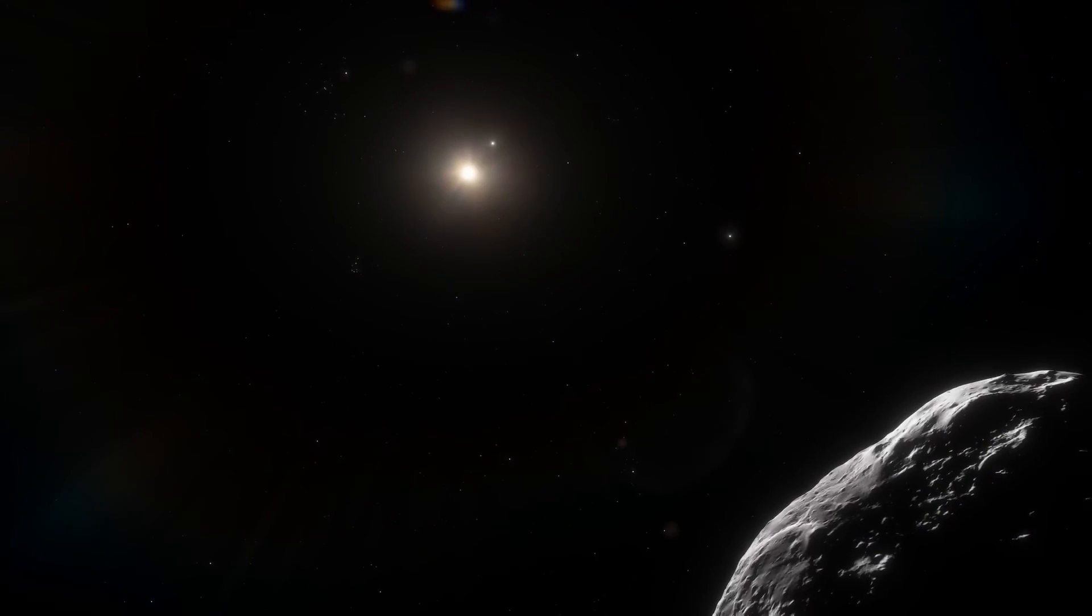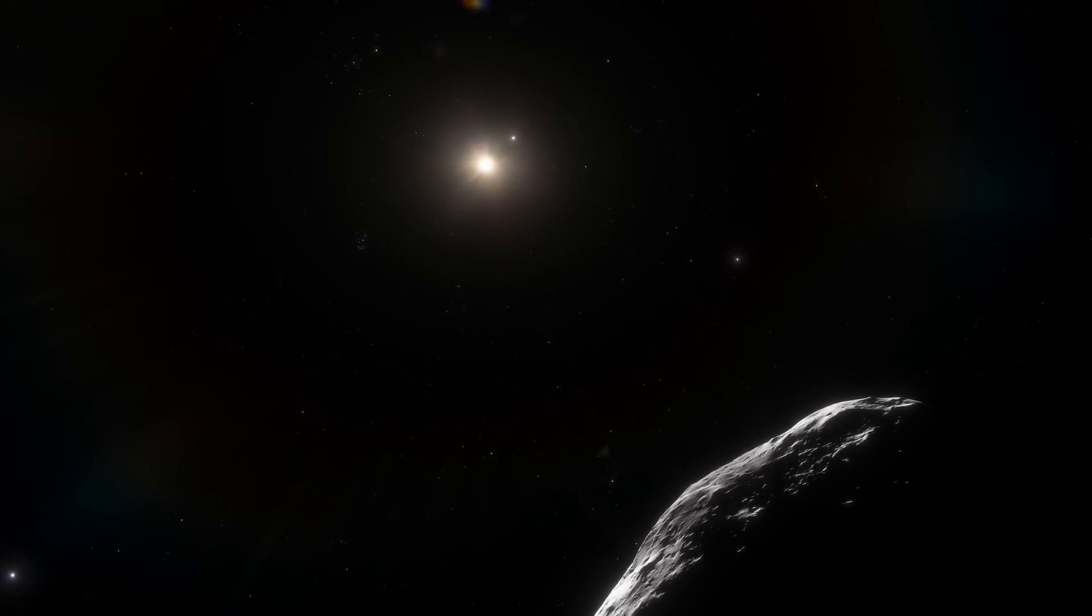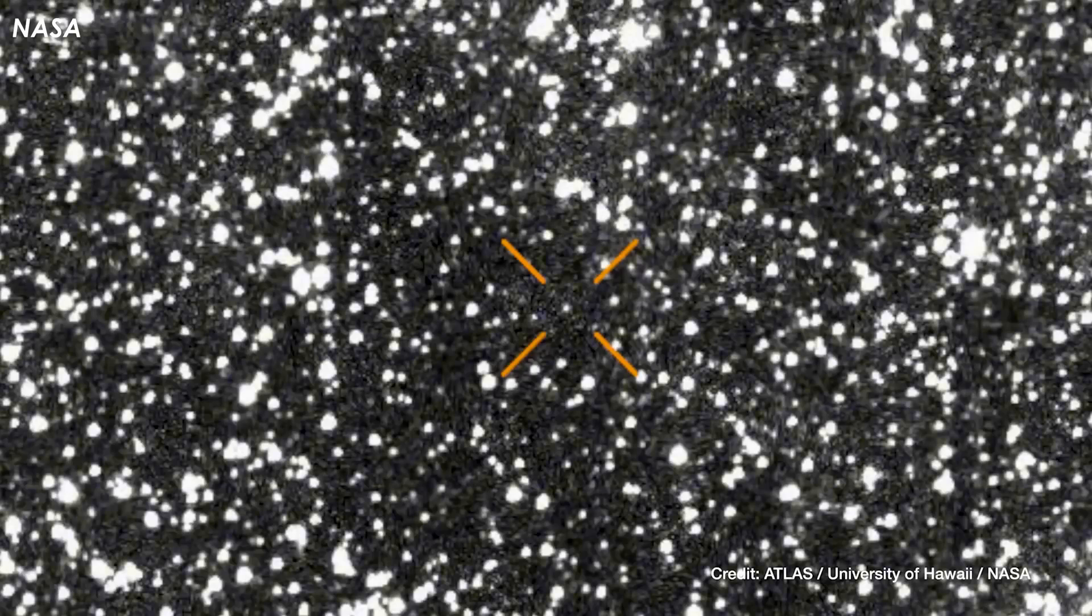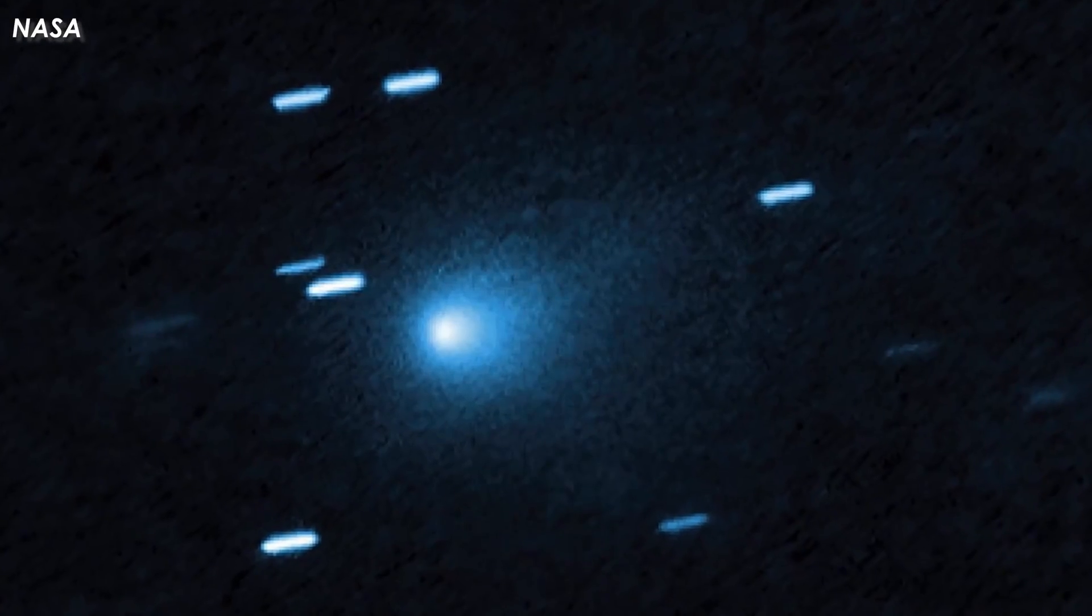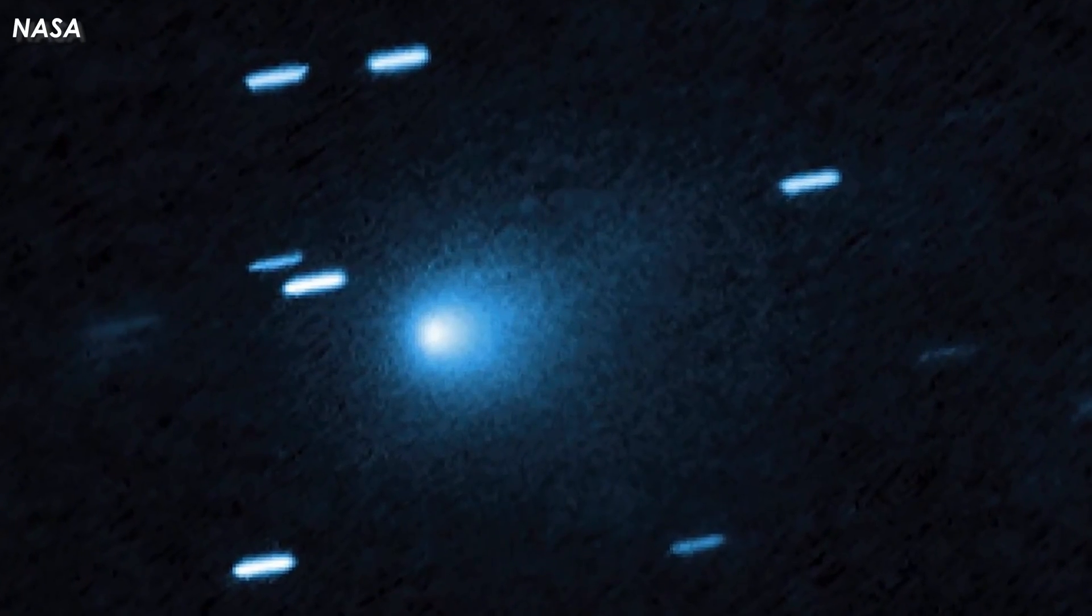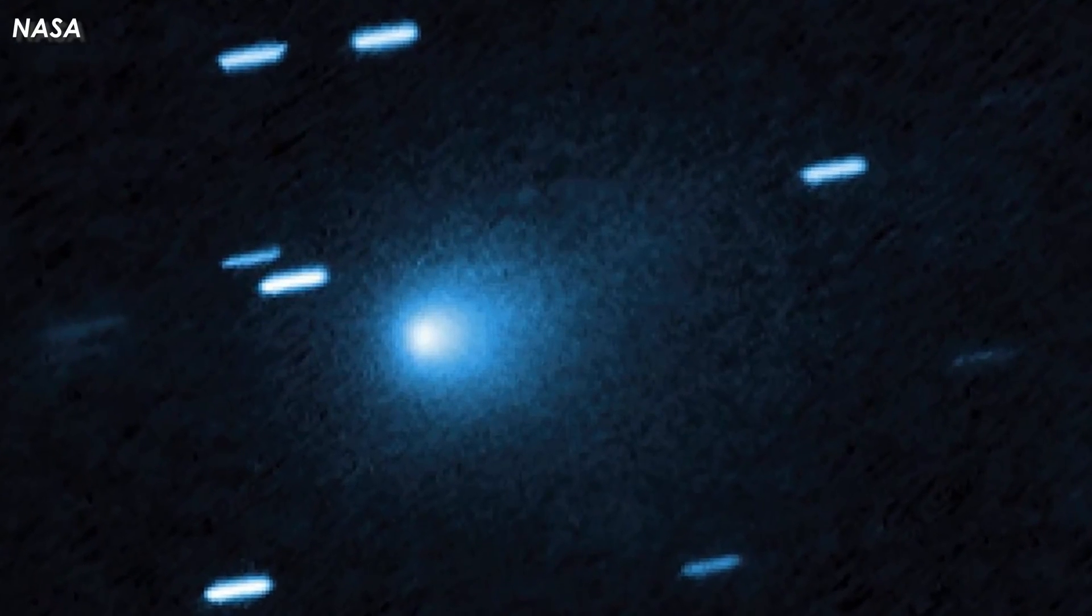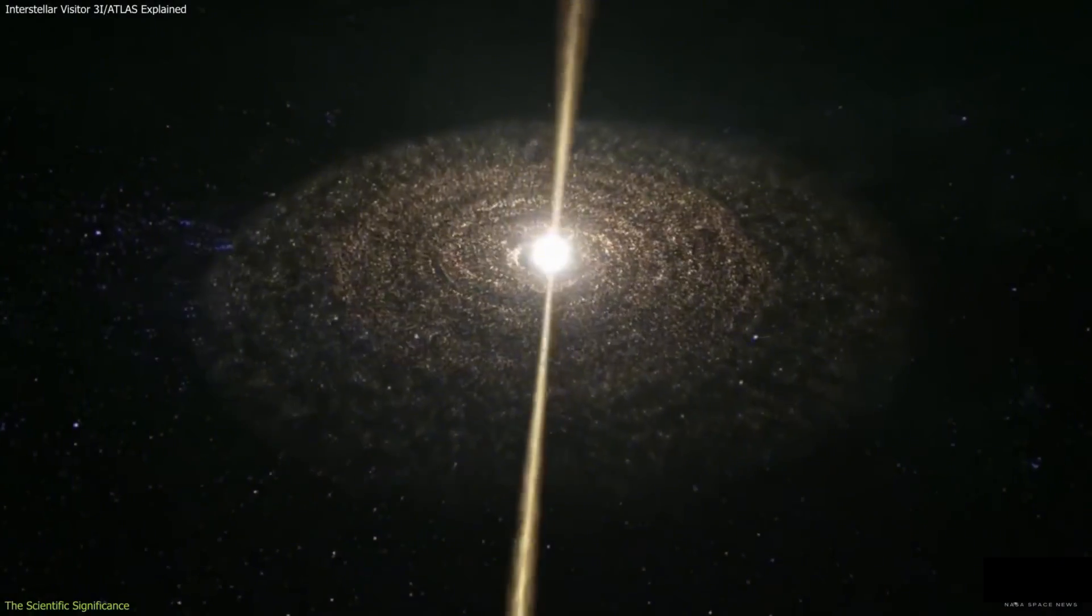The controversies it sparked reflect not only curiosity, but also a deeper cultural uncertainty. Who controls our window on the universe, and what happens when that window goes dark? For now, the answers drift with the object itself, outward past Jupiter, shrinking into the cold. Whether 3i Atlas is remembered as the third interstellar visitor or as the spark for another era of suspicion depends on what we choose to see in its silence.